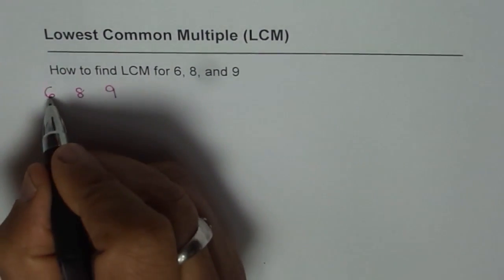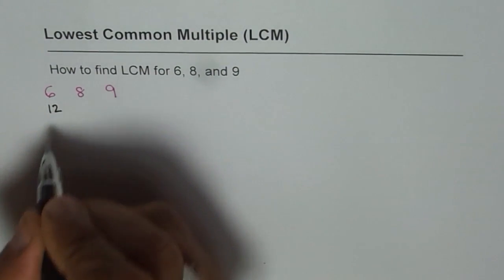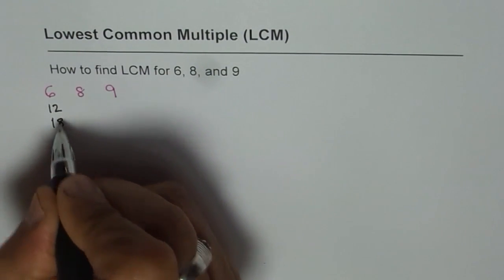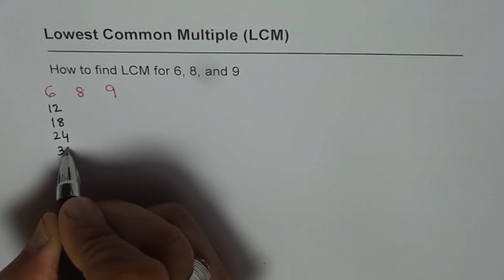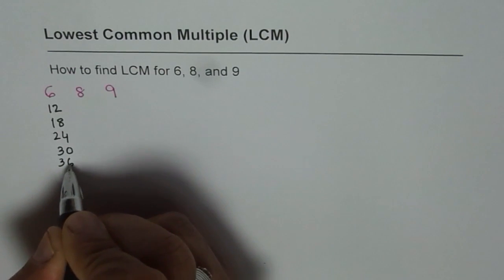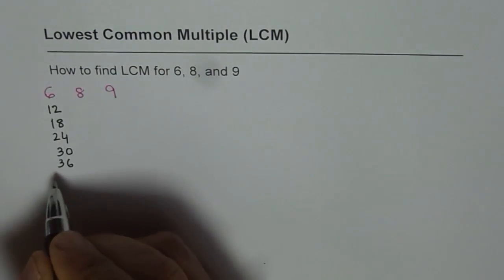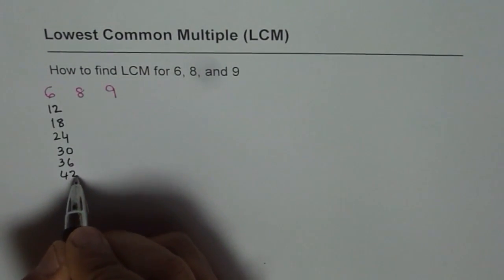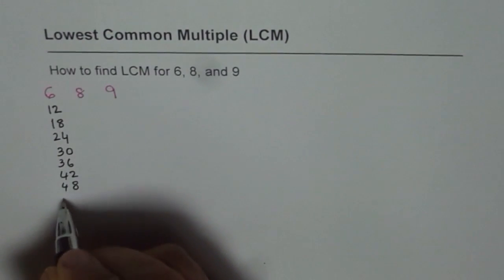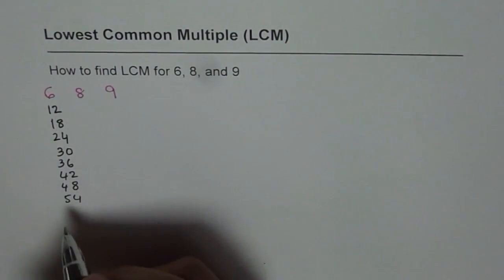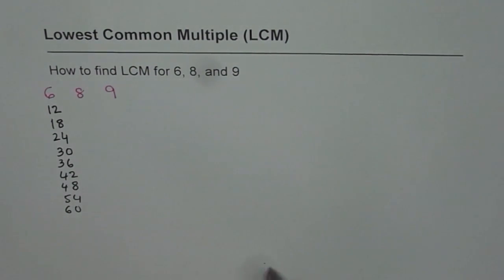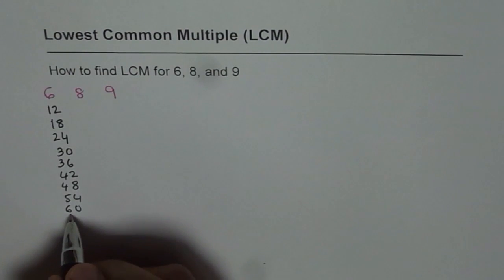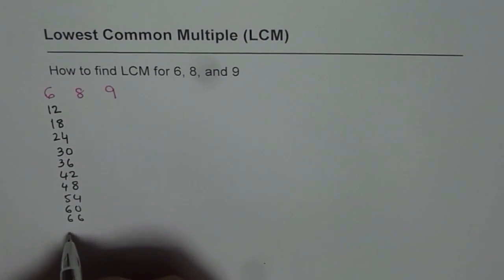So 6 times 1 is 6, times 2 is 12, times 3 is 18, times 4 is 24, then we have 30, 36, 42, 48, 54, 60 — I think I will run out of space — and 66, and I will go up to 72.